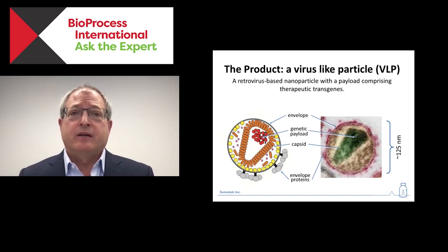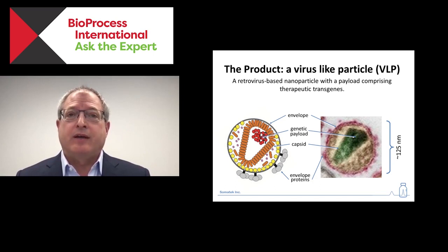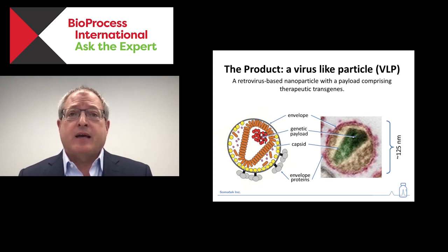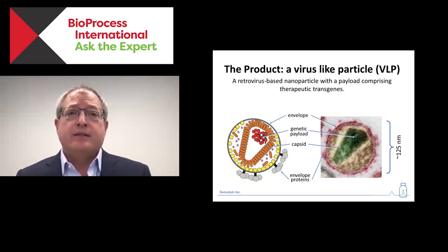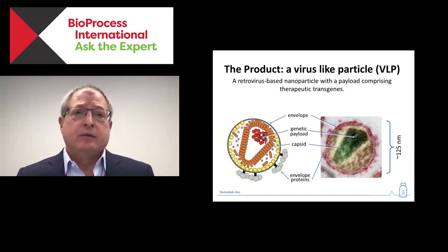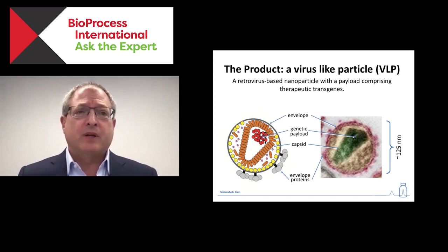On the right is a micrograph of the same beast. There are two key points here. One is that the particle is large — it's over a tenth of a micron, which means it's right on the edge of being able to sterile filter. Also, it's decorated with proteins, largely glycoproteins. The number of proteins and the exact charge of each protein is variable. This is a common challenge in downstream process development for viruses — they tend to be heterogeneous with respect to charge and other characteristics.